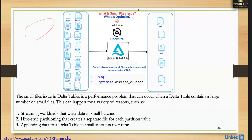Even if you have less data but more small files, performance is impacted. This can happen over time — for example, if a table is getting data added every day with files less than 20 MB or 30 MB. After one month, two months, or six months, the number of files can increase significantly.